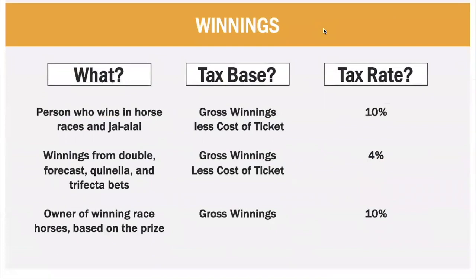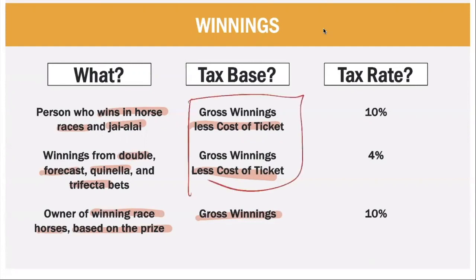Winnings: unlike other percentage taxes that use gross receipts, winnings use a net tax base — gross winnings less cost of ticket. Business activities covered: persons who win in horse races or jai alai (gross winnings less cost of ticket × 10%); winnings from double, forecast, quinella, and trifecta bets (gross winnings less cost of ticket × 4%); and owners of winning race horses based on the prize (gross winnings × 10%, no deduction for cost of ticket).